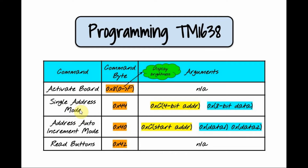The Single Address Mode command, with hex value 0x44, allows us to send a byte to one of the LEDs or one of the 7-segment displays. After sending the Single Address command byte, the next byte sent determines the address of the target device. This 8-bit address must always start with hex value C followed by a 4-bit value. The next byte after the address is the data itself.